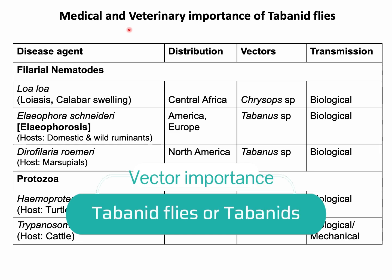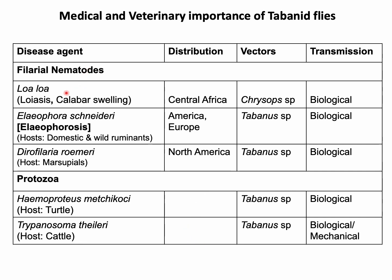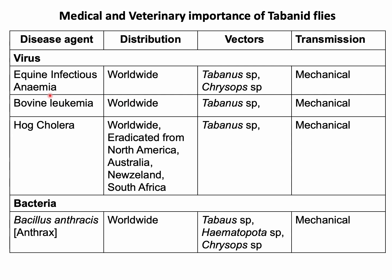Tabanid flies can act as both biological and mechanical vectors. For different nematodes such as Loa loa, Elaeophora, and Dirofilaria roemeri, and for protozoa like Haemoproteus, Trypanosoma theileri, they act as biological vectors. For different viral, bacterial, protozoan, and rickettsial diseases, Tabanid flies can act as efficient mechanical vectors.